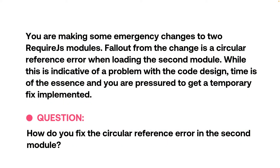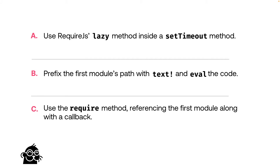You are making some emergency changes to two RequireJS modules. A follow-up from the change is a circular reference error when loading the second module. While this is indicative of a problem with the code design, time is of the essence and you are pressured to get a temporary fix implemented. How do you fix a circular reference error in the second module? Option A: use RequireJS's lazy method inside its setTimeout method. Option B: prefix the first module's path with text and eval the code. Option C: use the require method referencing the first module along with a callback.